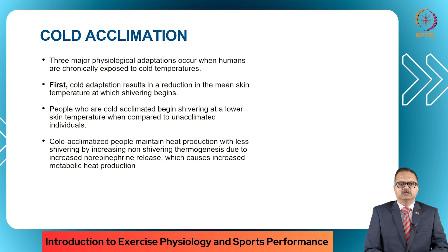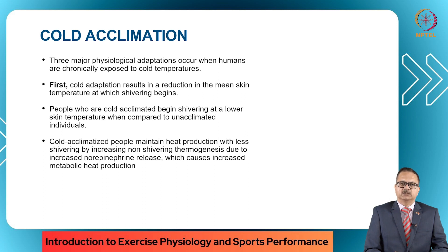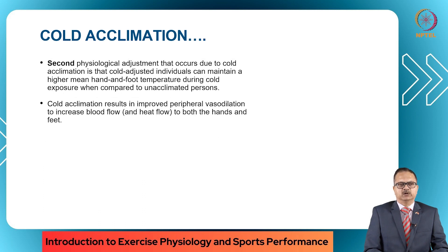There are three major physiological adaptations when humans are chronically exposed to cold. First, cold adaptation results in a reduction in the mean skin temperature at which shivering begins; cold-acclimated persons begin to shiver at a lower skin temperature than unacclimated individuals. Cold-acclimated people also maintain heat production with less shivering by increasing non-shivering thermogenesis, driven by increased norepinephrine which causes cells to increase metabolic heat production. Second, cold-acclimated individuals maintain a higher mean hand and foot temperature during cold exposure, due to improved peripheral vasodilation increasing blood flow and heat flow to the extremities.